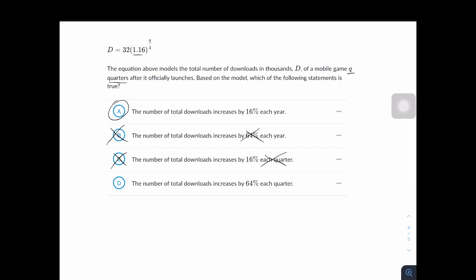D says the number of total downloads increases by 64% each quarter. You can't really say that since Q over 4 and 1.16. So answer choice D doesn't make sense. A is the correct answer.